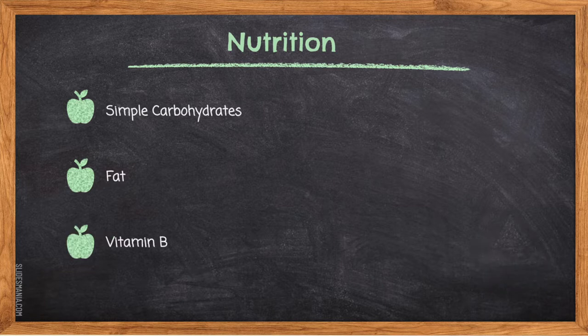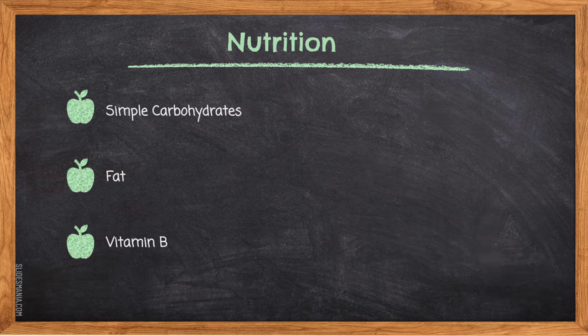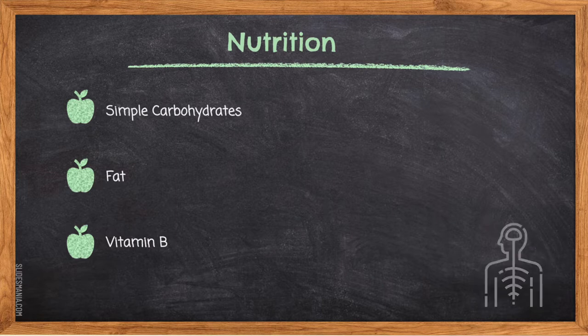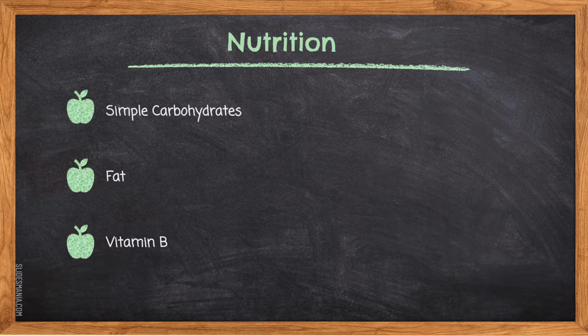Vitamin B: B vitamins help the body turn carbohydrates into energy, help with normal growth and development of the body, maintain good appetite and normal digestion, and are essential for the proper functioning of your nervous system.